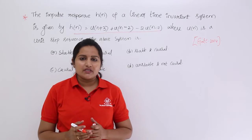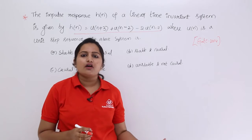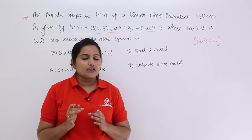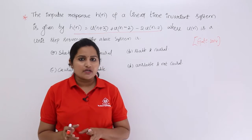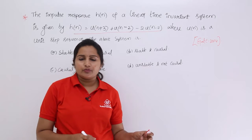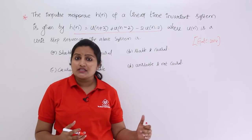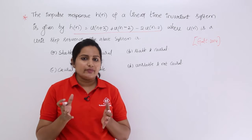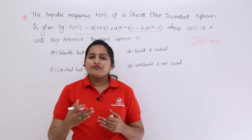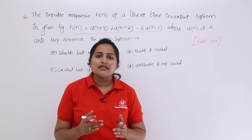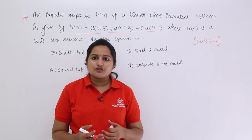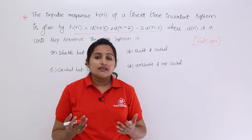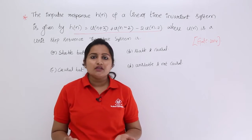To check stability, as discussed in the topic of stable and unstable systems, a system is said to be stable if it produces a bounded output for a bounded input — that is, a constant or finite amplitude output. For causality, if the system response depends upon present and past values only, it is causal. If it depends upon future values, it is non-causal.